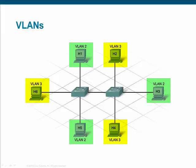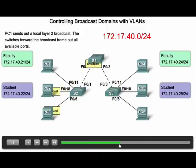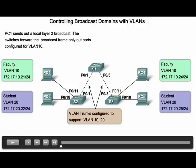A simple VLAN implementation is displayed in this diagram. There are two groups of users — faculty and student. Notice that when all PCs are under the same IP network and PC1 sends a broadcast, all devices receive and must process that broadcast. One benefit of VLAN implementation is broadcast containment — each VLAN is its own broadcast domain. After VLAN implementation, broadcasts sent by PC1, which is now on VLAN 10, only reach other devices on VLAN 10. Broadcast containment reduces unnecessary network bandwidth usage, and the amount of CPU cycles devices use to process broadcasts is also reduced.